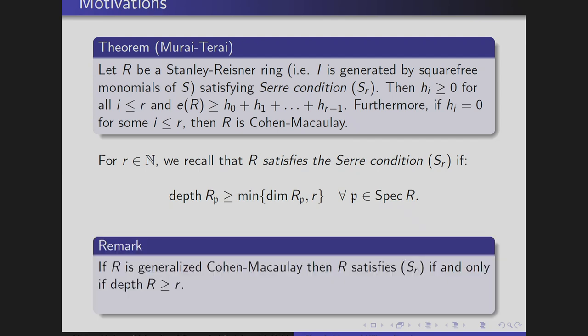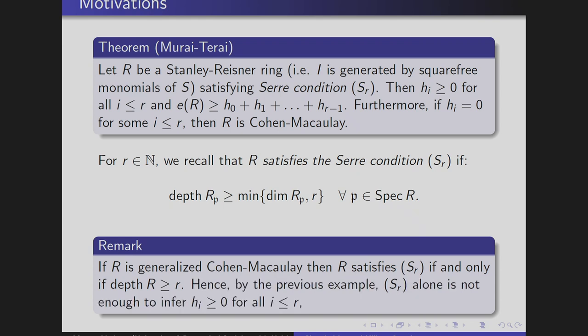Notice that if R is generalized Cohen-Macaulay, then R satisfies condition S_r if and only if the depth of R is at least r, because whenever you localize at p other than the maximal ideal, the ring is already Cohen-Macaulay. So it is enough to look at this when p is the maximal homogeneous ideal.